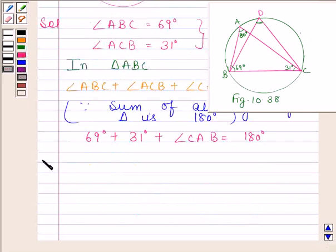This implies angle CAB is equal to 180 degrees minus 100 degrees. So angle CAB is equal to 80 degrees.